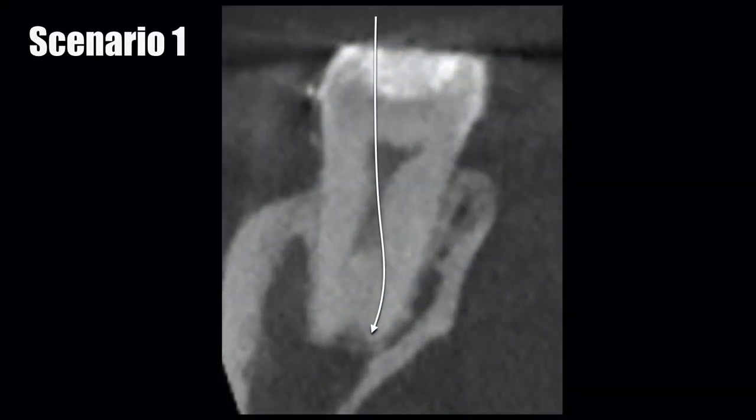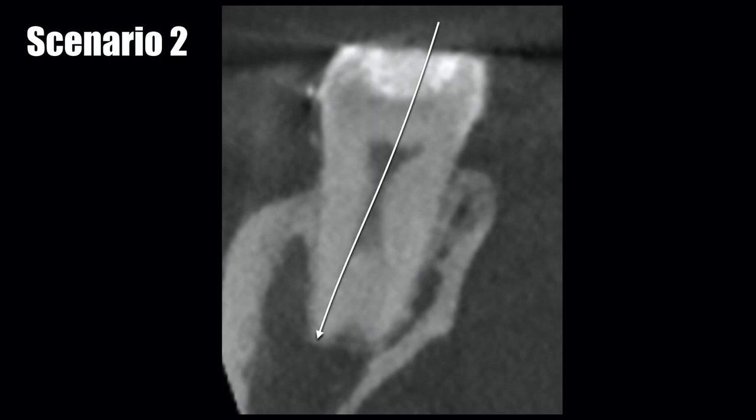When we initially assess this distal canal and start placing the hand file in there, there are really only one of three things that file is going to do. Number one: the file naturally deflects to the lingual and advances into the apical third. Number two: the file naturally deflects to the buccal and advances into the apical third. Or number three: the file hits an abrupt mid-root stop and fails to advance beyond that point — the tip is running right into the top of that furcation area where the canal splits. If the third scenario happens, you can place your file stopper on a reproducible reference point and measure that distance — this is the level of the canal bifidity.